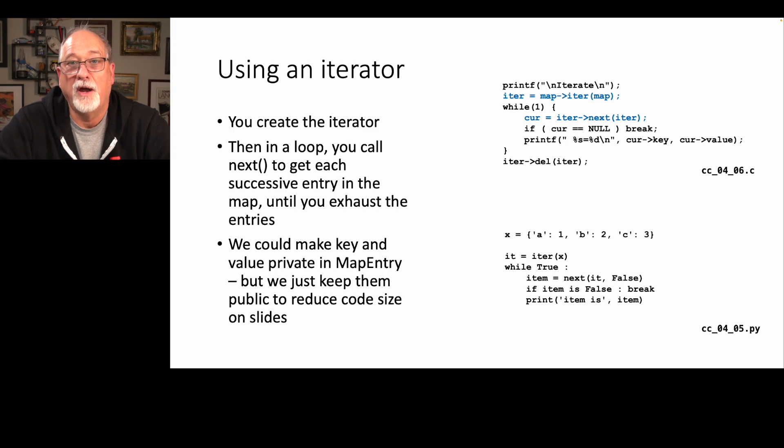So to start the iteration, to prime the iteration, we call the map object and say, hey, give me an iterator for the map. And we get that back, and we're going to store that in our variable iterator. Then we're going to start an infinite loop that says, while one, or while true, cur equals iter next. Give me the next one, which the first time is going to give me the first one. Then if I got a null, I'm done with the loop. Otherwise, I print the key and the value of the one I got, and then I go up, and I iterate to the next one. Print it, up, print, up, print, up, print. Oop, I got a null.